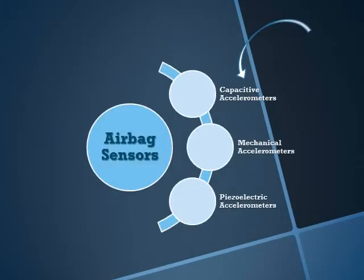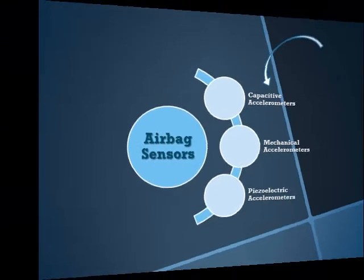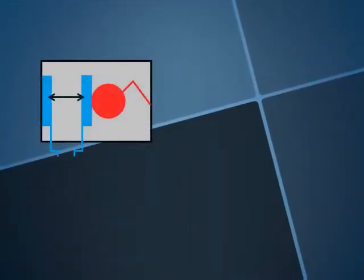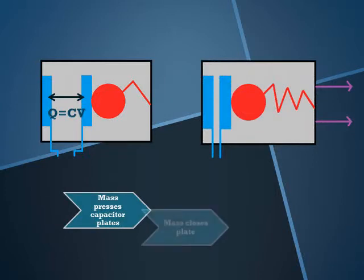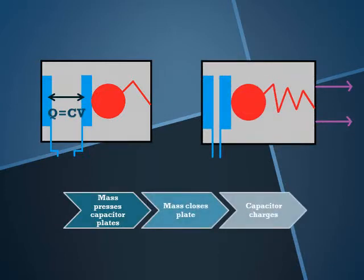A capacitive accelerometer is one variation of accelerometers used by airbag sensors. A capacitor consists of two parallel metal plates that store charge between them. If a moving mass alters the distance between the plates, measuring the change in their capacitance can give a measurement of the force that is acting on the mass.